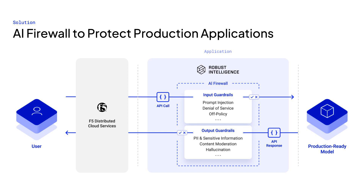Robust Intelligence has partnered with F5 to bring our industry-leading AI firewall to F5 Distributed Cloud Services. This partnership extends F5's coverage of traditional services and applications to include generative AI, making it easy for their customers to get comprehensive coverage through their trusted provider.